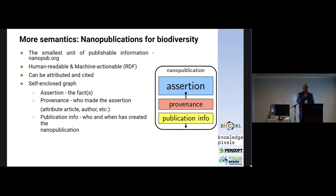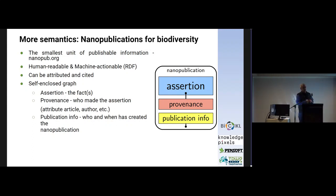A nanopublication is a simple atom of knowledge — it's an assertion about something. Each nanopublication consists of three main components. The first one is the assertion, which is based on the classical RDF triple: subject, predicate, and object relationship. In addition to that assertion, the nanopublication also has provenance information — where this assertion has been taken from, for example an article DOI.